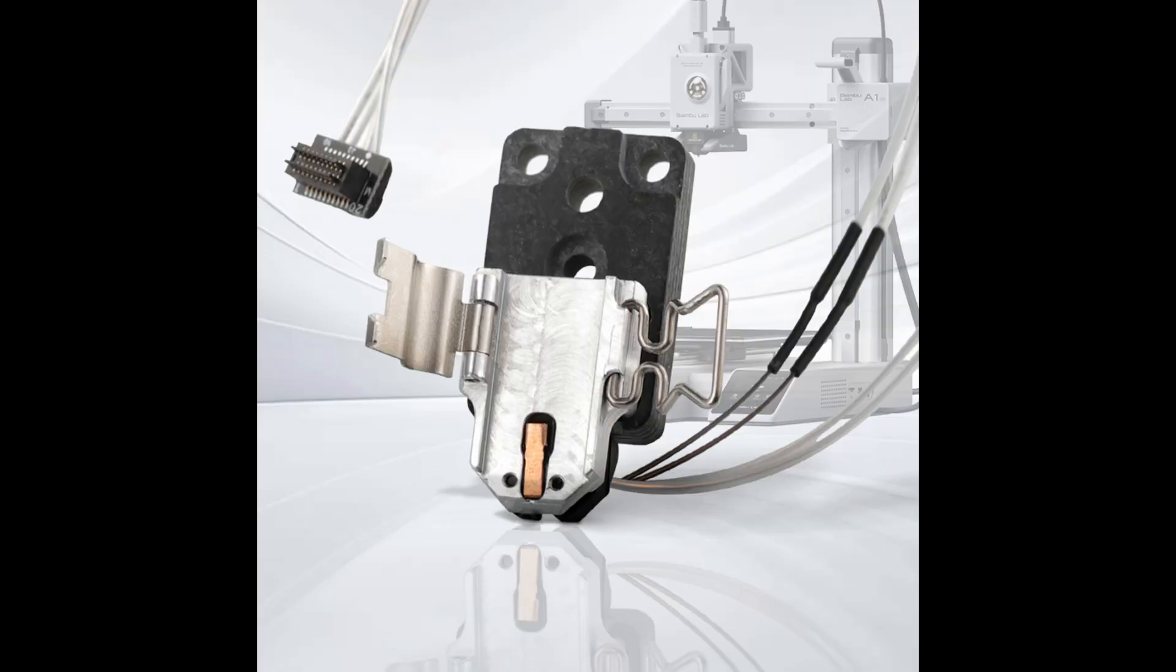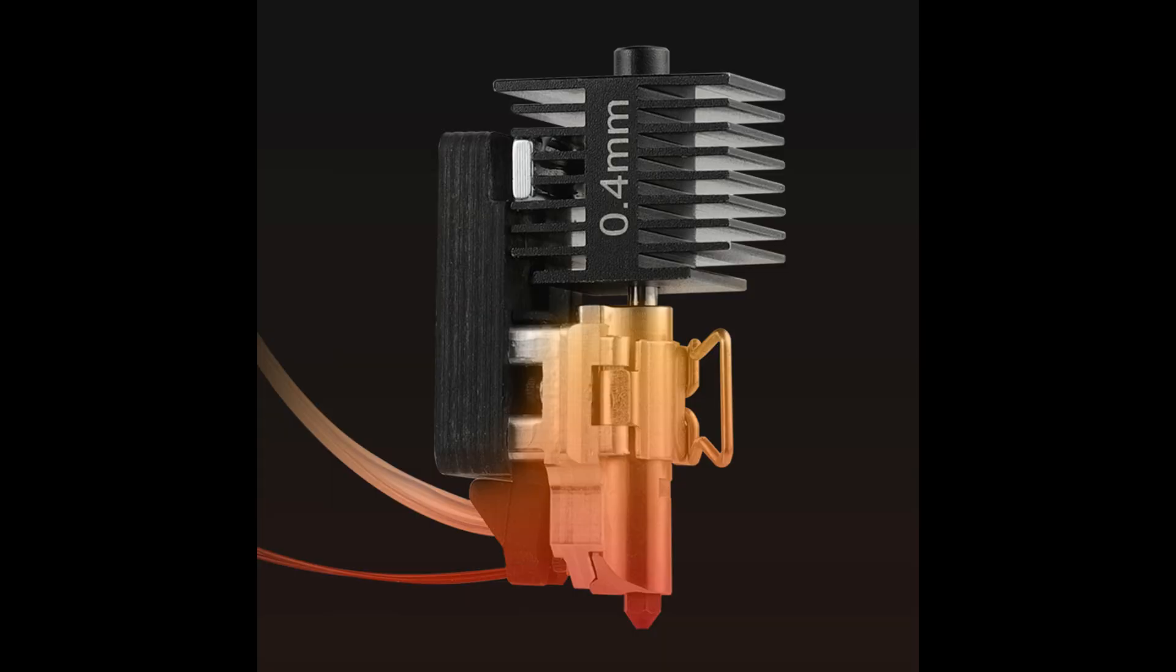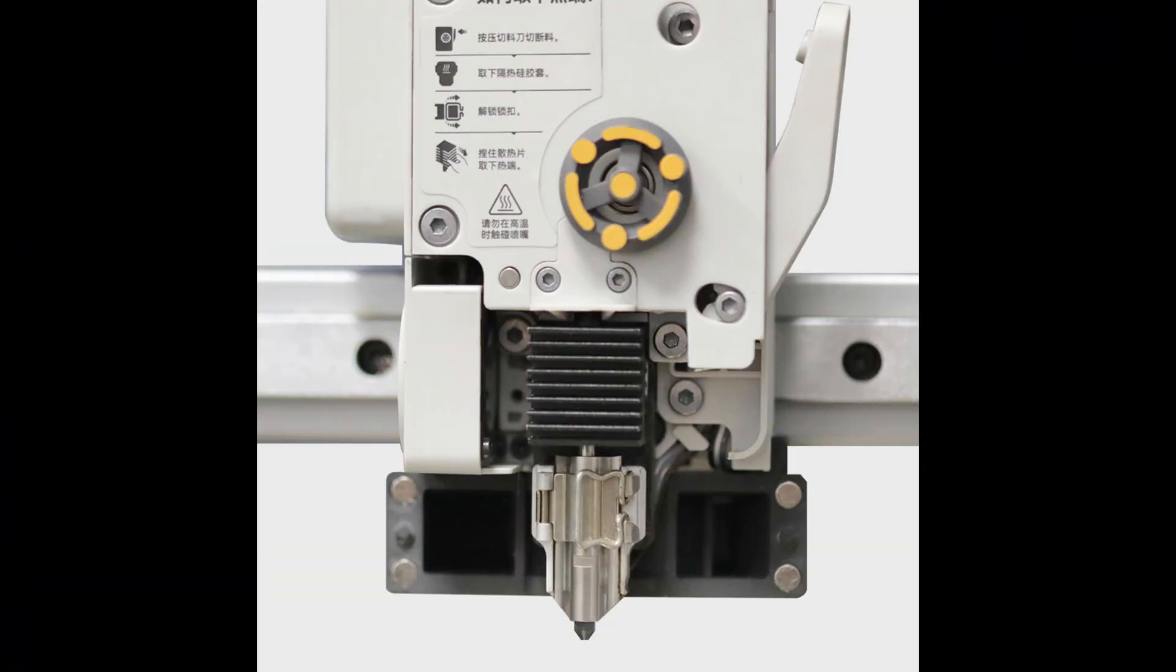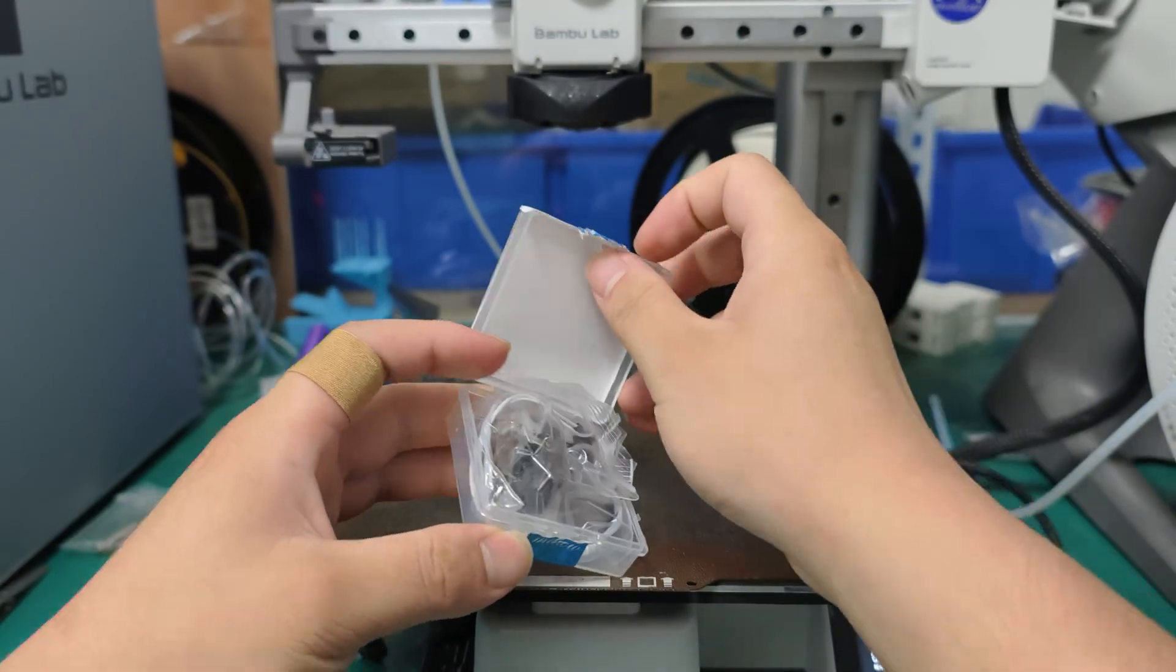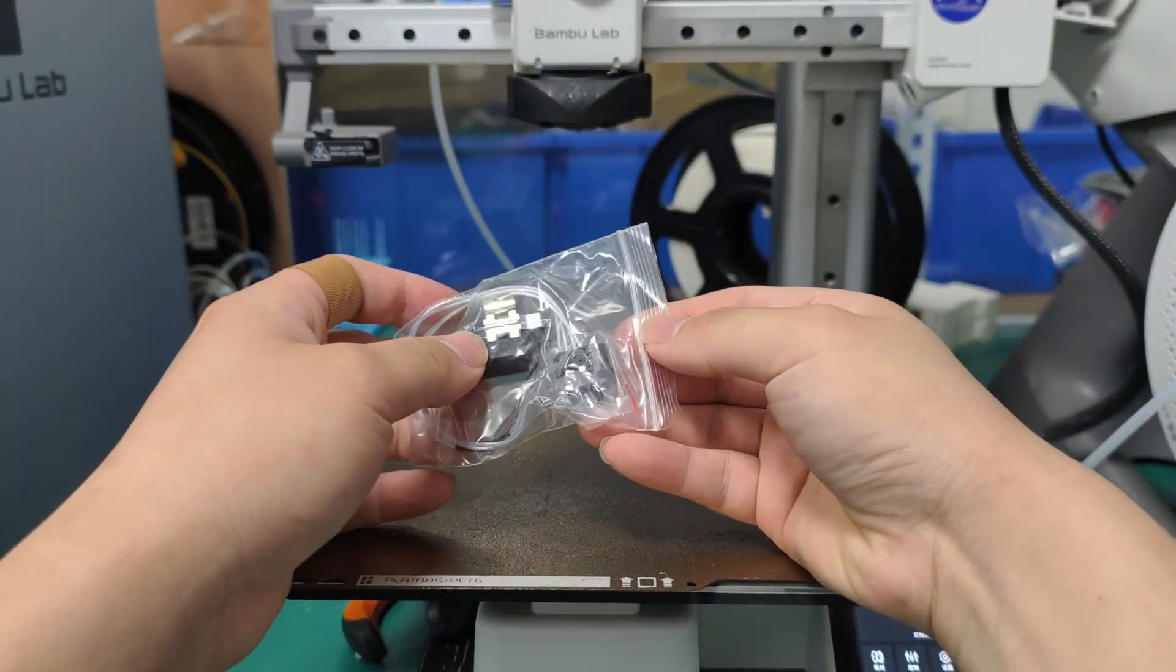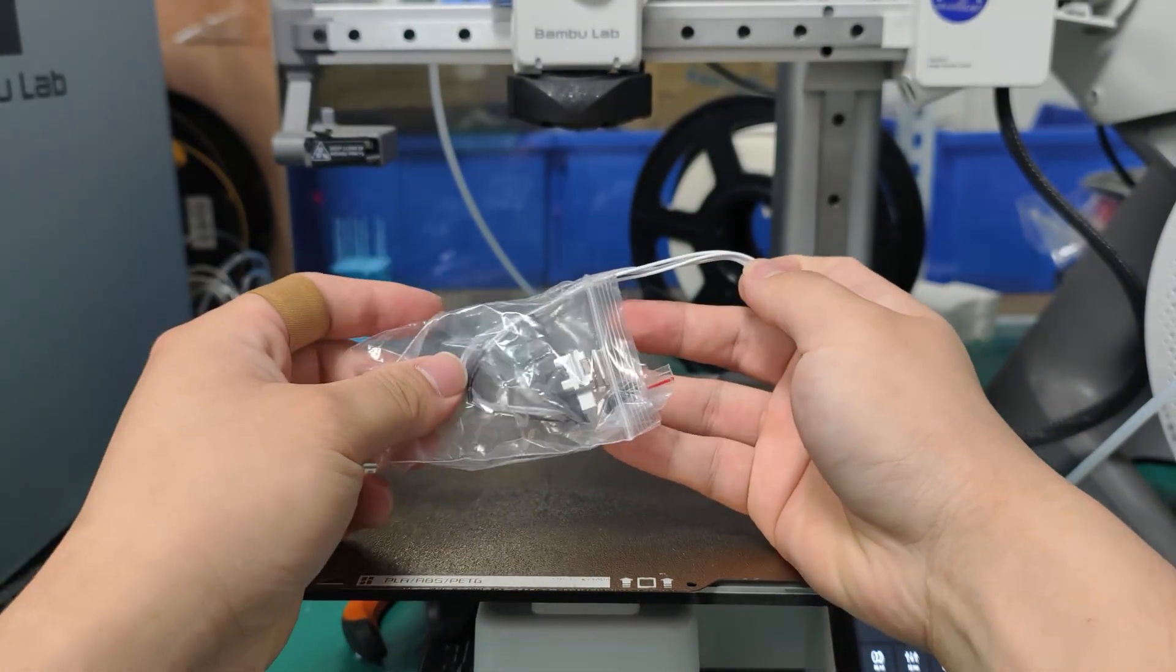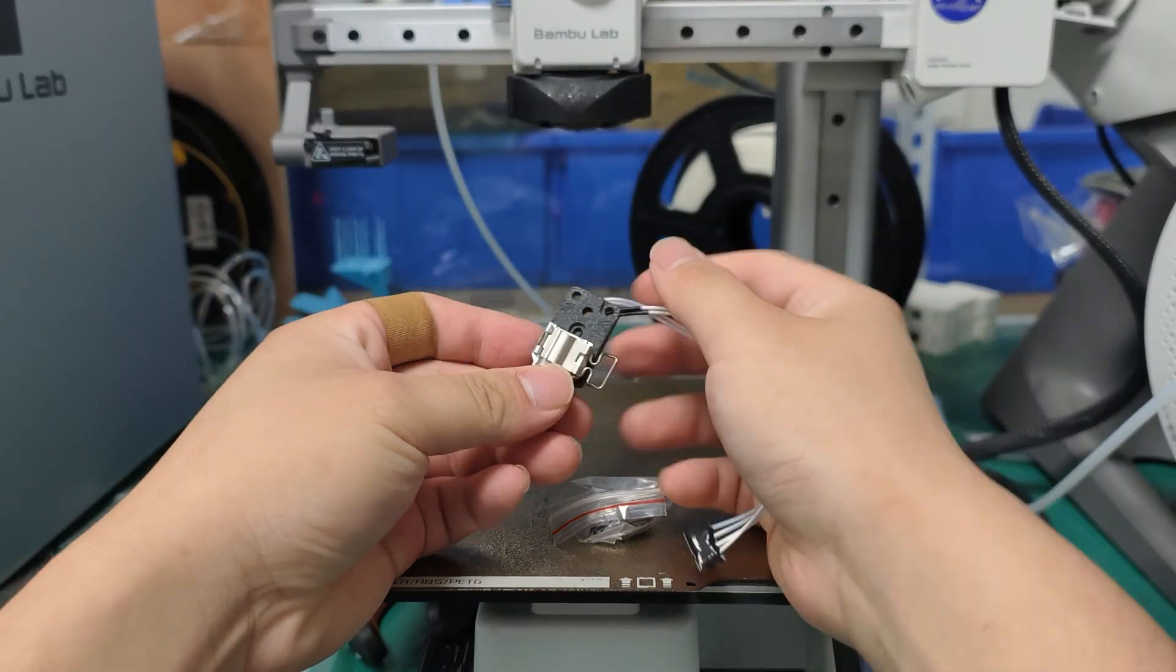Today we're here to show you the mounts for the A1 and A1 mini. Here's how to install our A1 heating block kit. You'll find an adapter and three screws in the package.